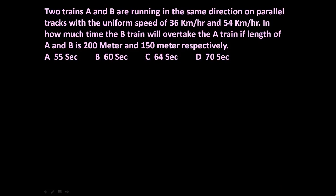Here the given problem is: two trains A and B are running in the same direction on parallel tracks with uniform speed of 36 kmph and 54 kmph. In how much time will B train overtake the A train if length of A and B is 200m and 150m respectively? Four options are given.